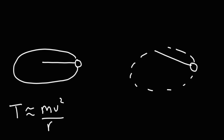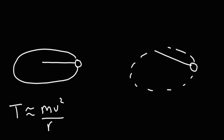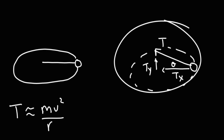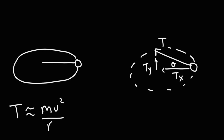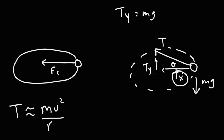Imagine you have a ball attached to a rope. When you're spinning it fast, it's going to have a nearly horizontal trajectory. If you're spinning it slow, it won't be perfectly horizontal but at an angle. The tension force will have a Y component and an X component, with angle theta. This situation applies to the tetherball problem. The weight force equals mg. The Y component of the tension force supports the weight force, and TX equals the centripetal force, which is mv squared over r.